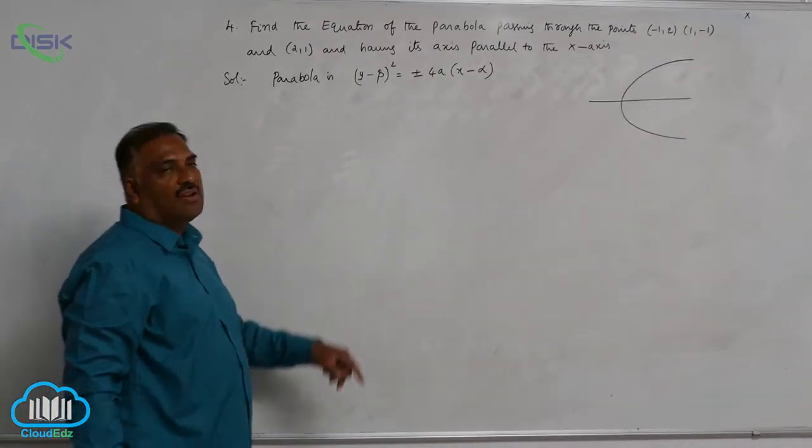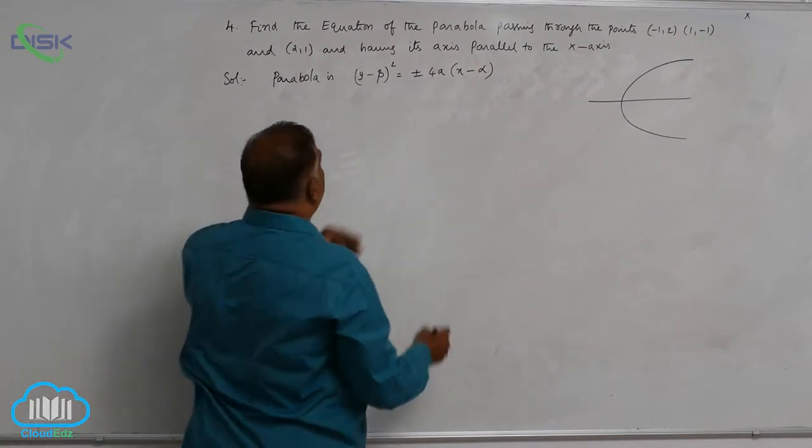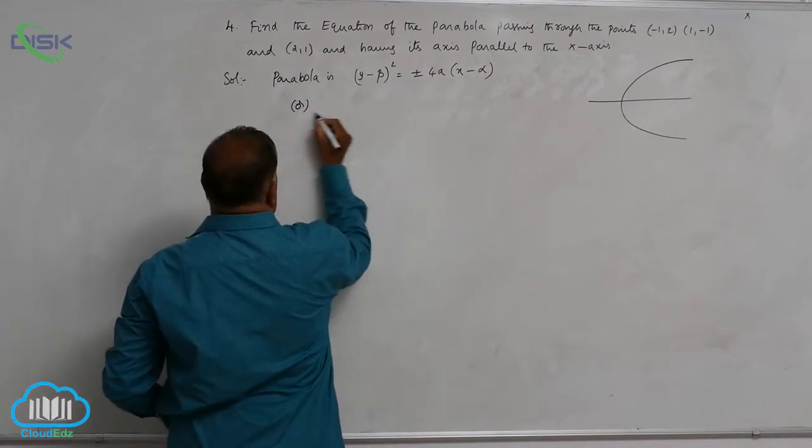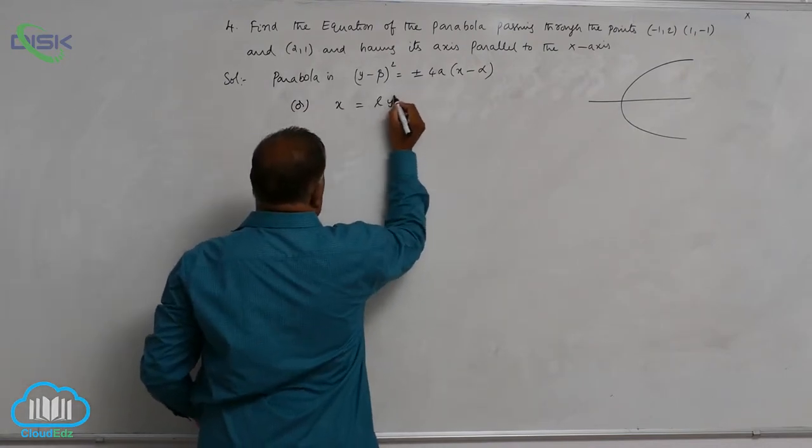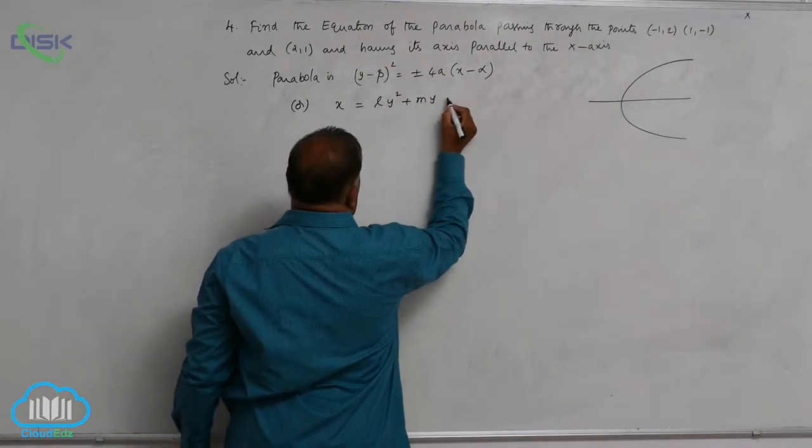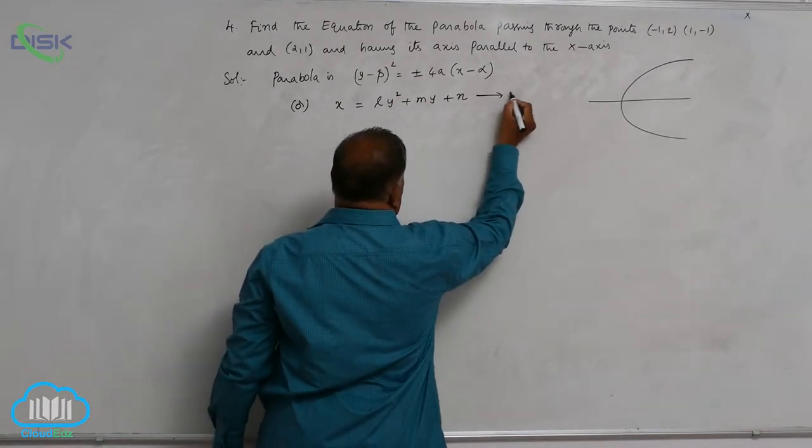Since points are given to you, you can rewrite this equation as x = ly² + my + n. Make it equation 1.